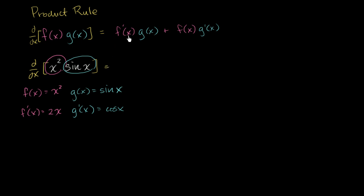This is going to be equal to f prime of x times g of x. So f prime of x, the derivative of f, is 2x times g of x, which is sine of x, plus just our function f, which is x squared, times the derivative of g, times cosine of x. And we're done. We just applied the product rule.